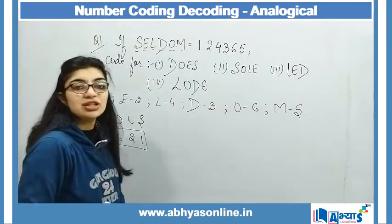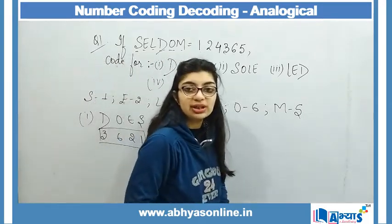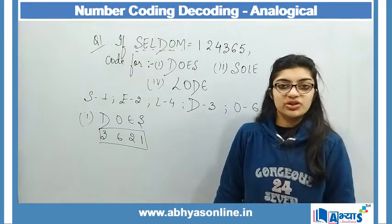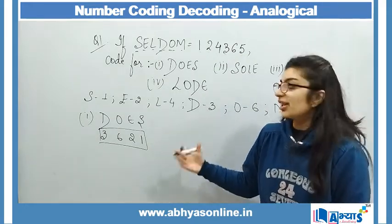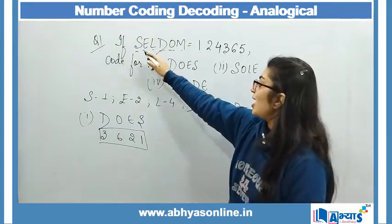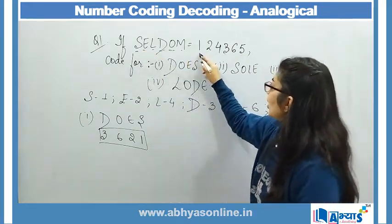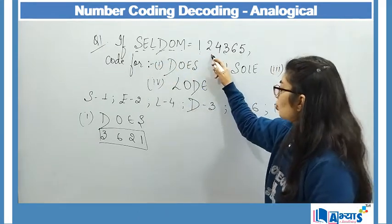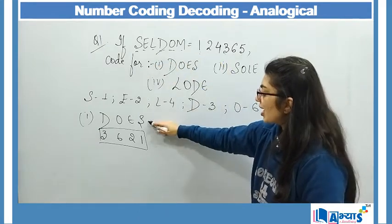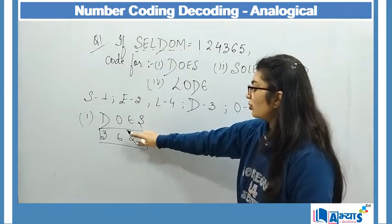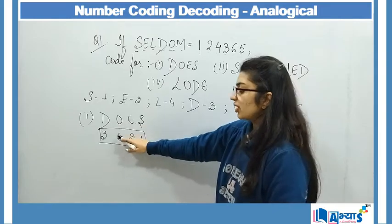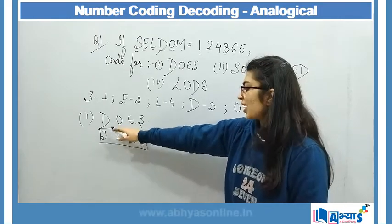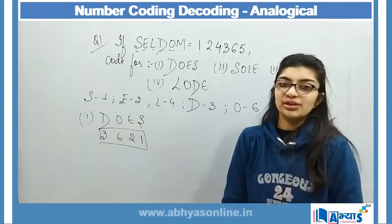So I have encoded using a particular logic. The logic is: S corresponds to 1, E corresponds to 2, S corresponds to 1, E corresponds to 2, O corresponds to 6, and D corresponds to 3.